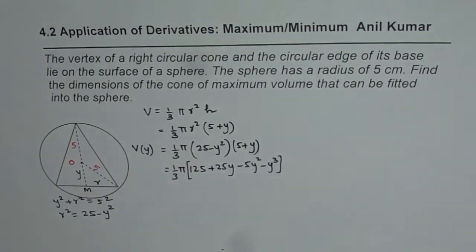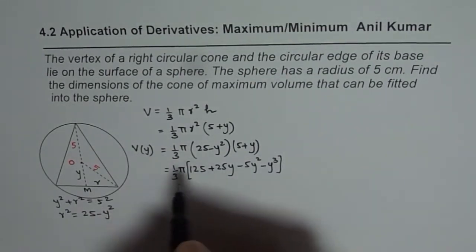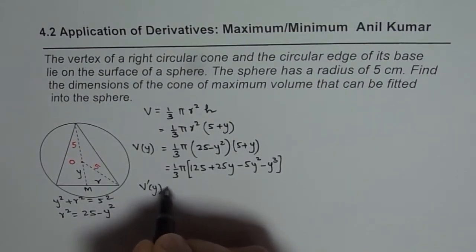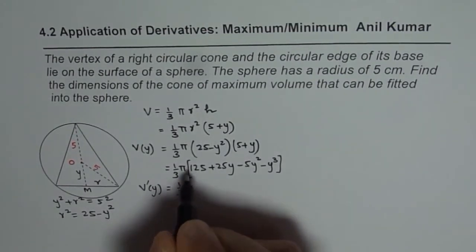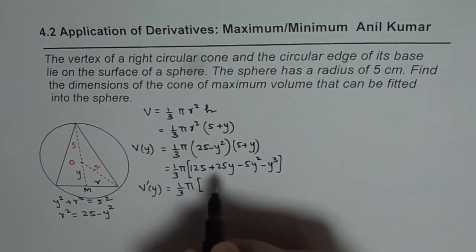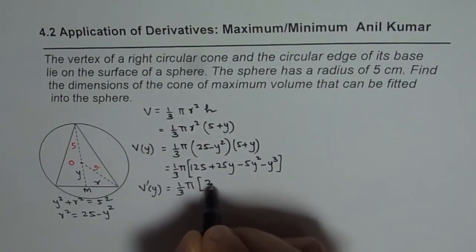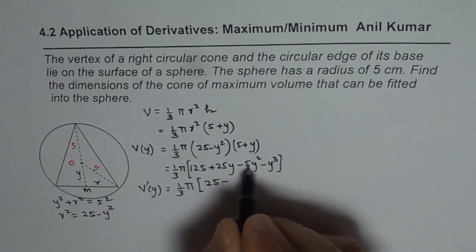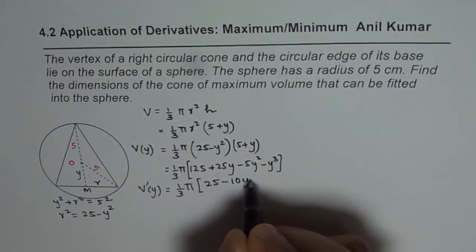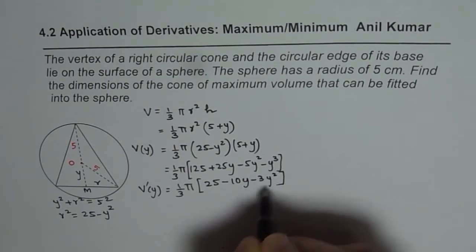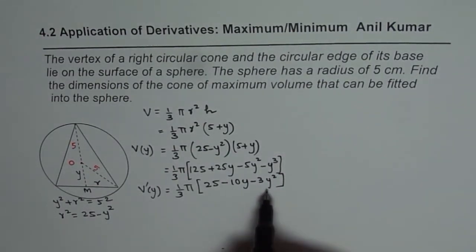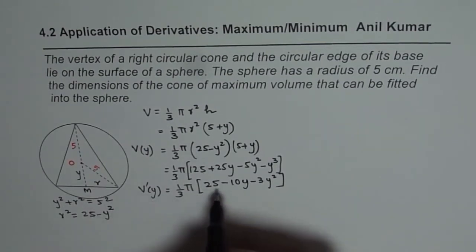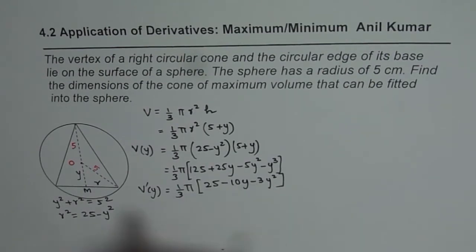So that becomes the expression for the volume. So finding derivative of the volume, we can get the critical number. So let us find derivative with respect to y. So we get 25 from, this is 0, that is 25, minus 10y minus 3y squared. So that becomes the derivative for this particular function. Now what we need to do is we need to maximize the volume. That means we should find the critical number. Now critical number will be when this term is 0.